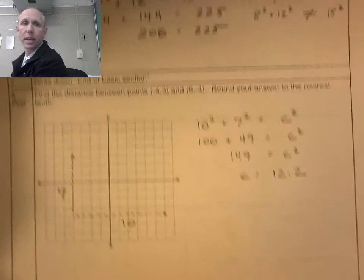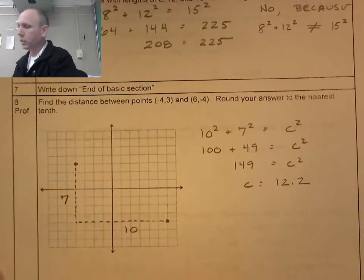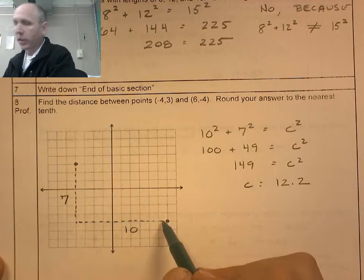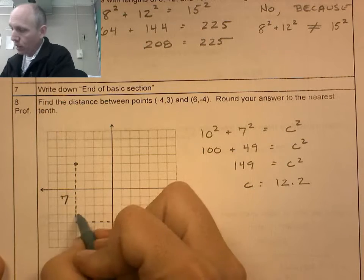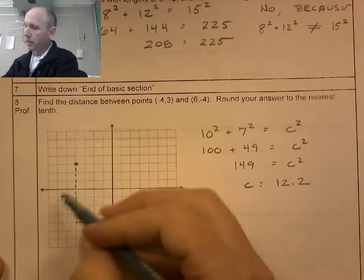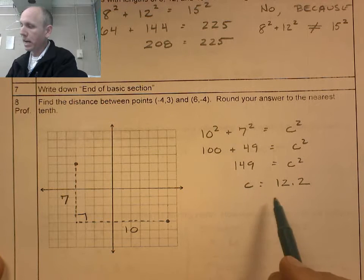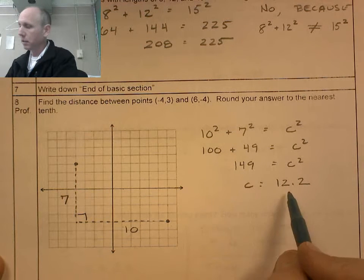We just did our basic. Now on to our proficient. Find the distance between the two points. I plot the two points. I turn it into a right triangle. I then square them, add them together. So 10 squared plus 7 squared. Go through the math. Take the square root of that.